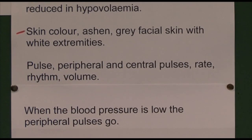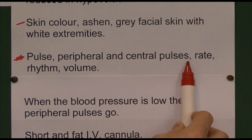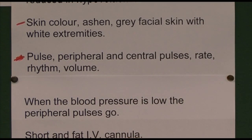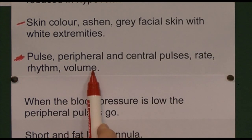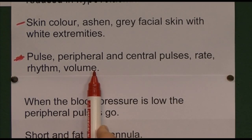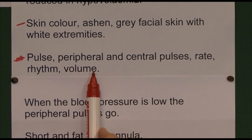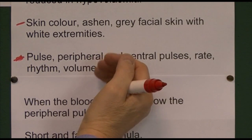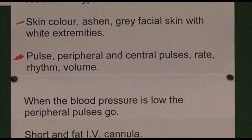The pulse is a very good indicator. Check both peripheral and central pulses — in badly traumatised patients it's best to take central pulses. We're looking at rate, rhythm, and volume. The classical pulse in someone who is hypovolaemic through haemorrhage is fast, weak, and thready. It's fast because of tachycardia, weak because blood volumes are low, and thready because individual stroke volumes are reduced — instead of feeling like a thick rope under your finger, it is very thin and thready.